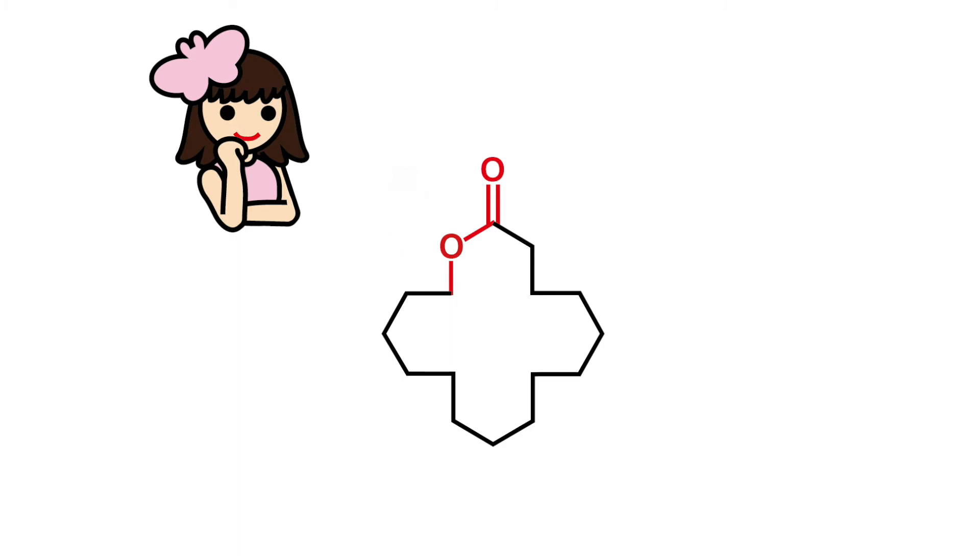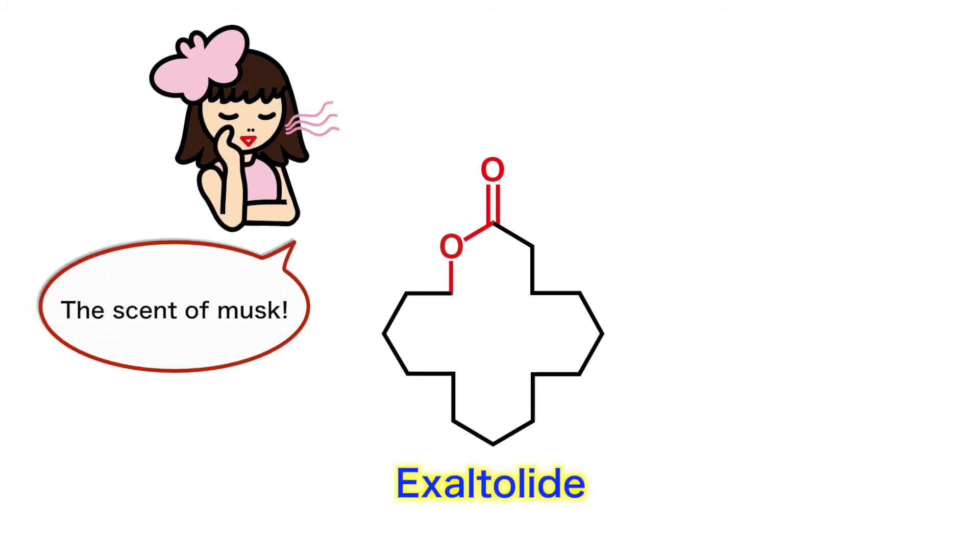This uniquely shaped molecule is called exactolide. It's a synthetic perfume ingredient with the pleasant scent of musk. The Sheena laboratory succeeded in synthesizing exactolide.